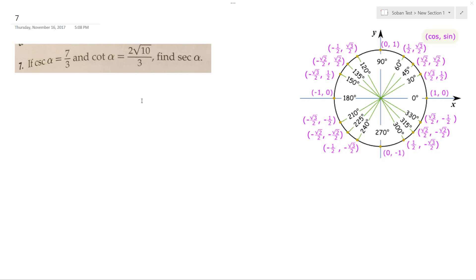So if cosecant's 1 over the sine, and that's positive, that means that sine of alpha is equal to 3 over 7.